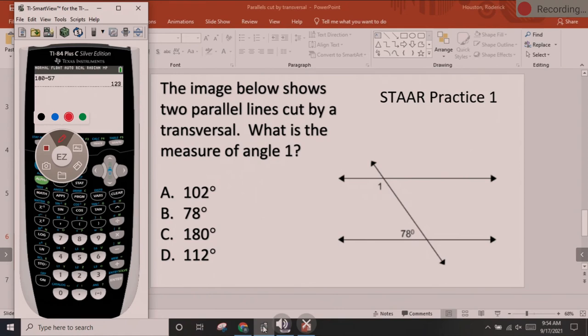It says the image below shows two parallel lines cut by a transversal. What is the measurement of angle 1? So they gave us this 78 right here from one of the acute angles. We can find the one directly next to it by doing 180 minus 78 and you will get 102. So this one is 102.